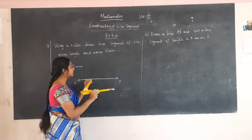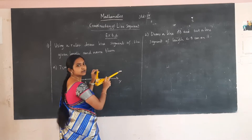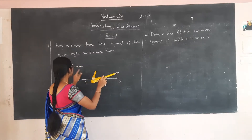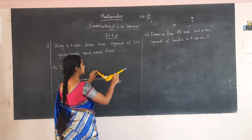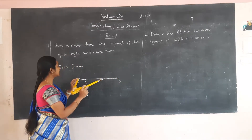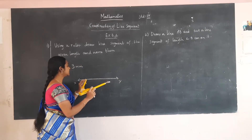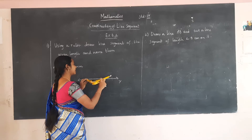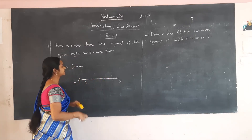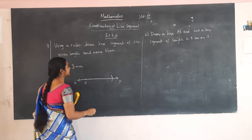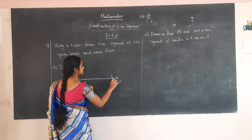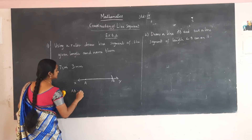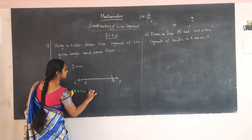Move towards the right until you reach 7 cm and 3 mm. Keep your compass on the scale with the sharp point exactly on 0, and move towards the right until you reach 7 cm and 3 mm. Once you reach, bring the compass and keep the sharp point on A, cut an arc, and name this point B. AB is a line segment of 7 cm and 3 mm.